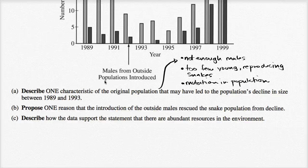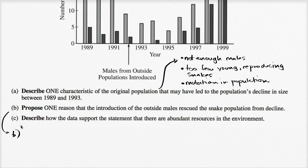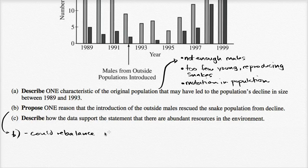In part B, the question asks: propose one reason that the introduction of the outside males rescued the snake population from decline. If you had not enough males, introducing males could rebalance the male-female ratio.